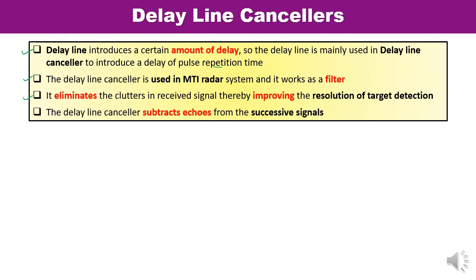The delay line canceler actually subtracts echoes from successive signals. Delay lines introduce a delay equal to the pulse repetition interval, which means the delay lines must be as long as several milliseconds — which is required for a typical ground-based surveillance radar.